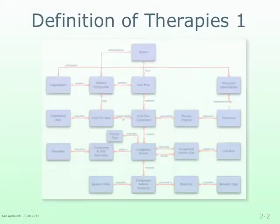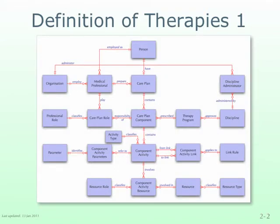We saw in part one of this presentation how the data object classes shown in the top half of this diagram can be used to identify the medical professionals and professional organisations that provide medical services to stroke survivors and their carers, and to define a care plan for a stroke survivor by selecting appropriate therapies as components of that care plan and to assign responsibilities for those components to appropriately qualified medical professionals.